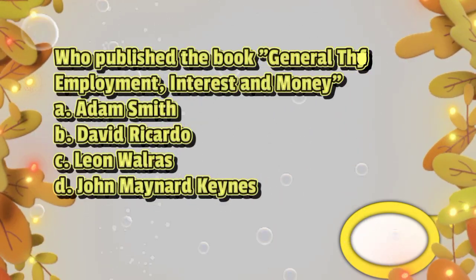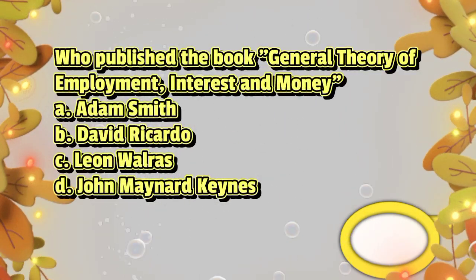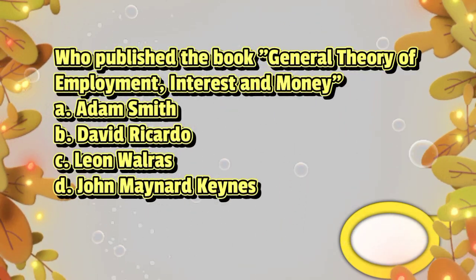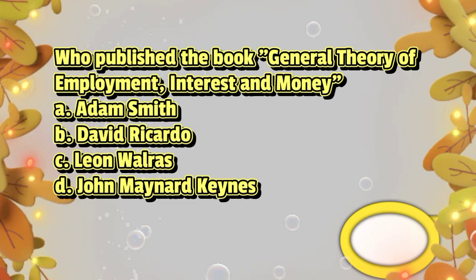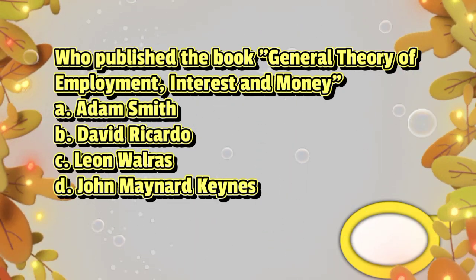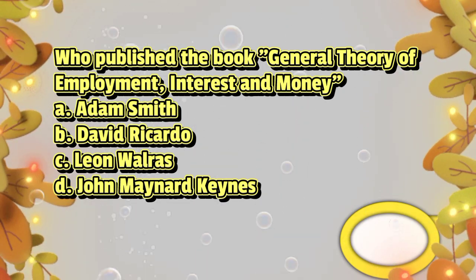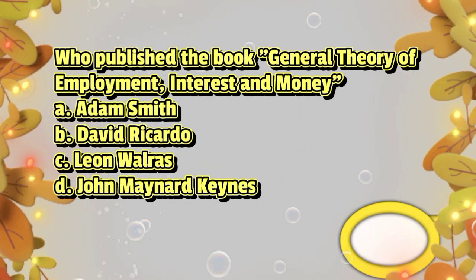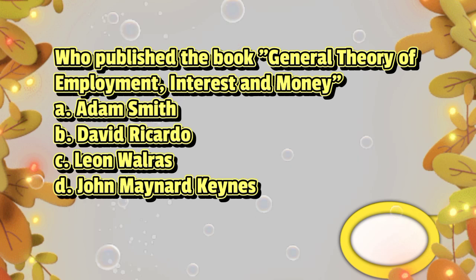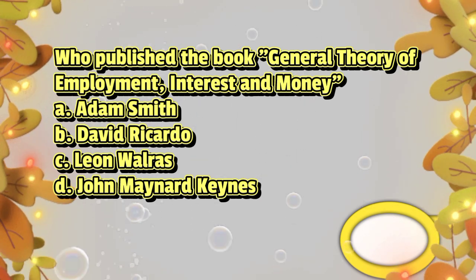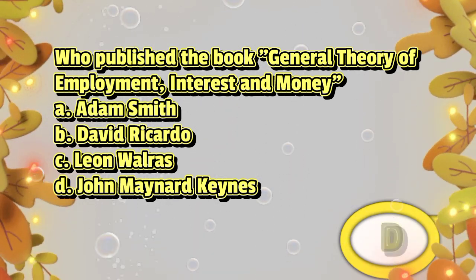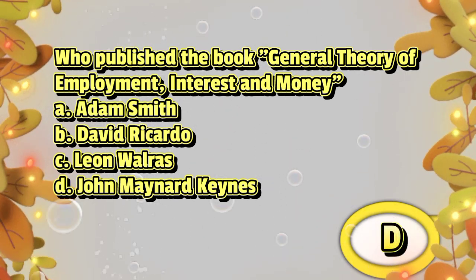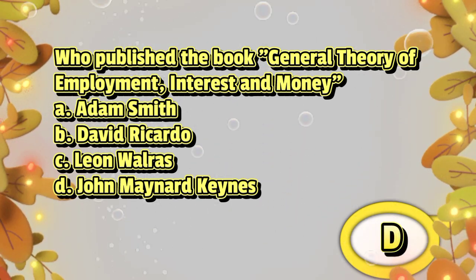Who published the book General Theory of Employment, Interest, and Money? A. Adam Smith. B. David Ricardo. C. Leon Walras. D. John Maynard Keynes. The answer is letter D.